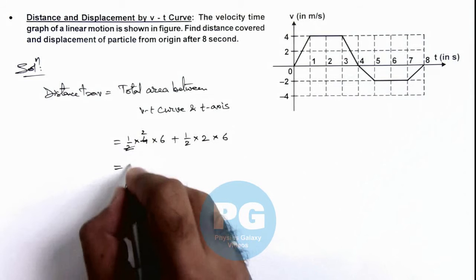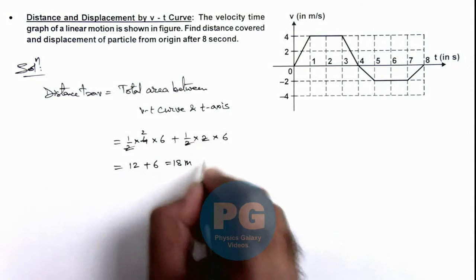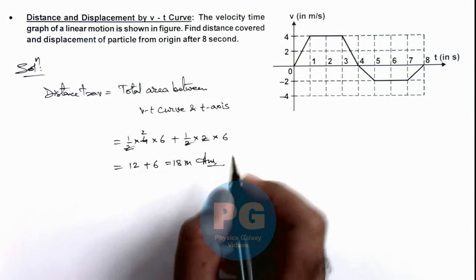So this is 2, and 6 multiplied by 2 is 12, plus 6, this equals 18 meters which is the answer for the distance travelled.